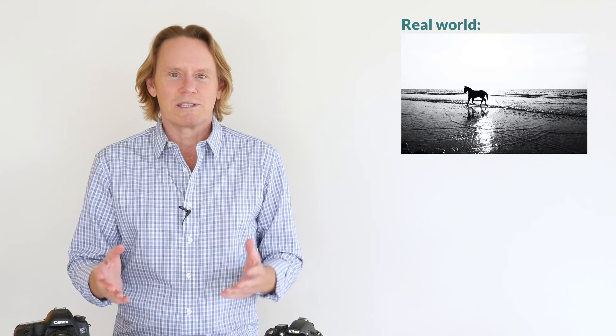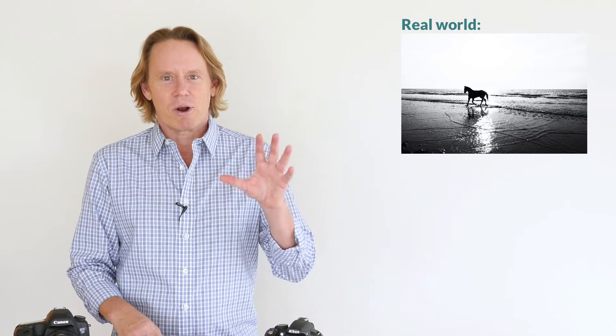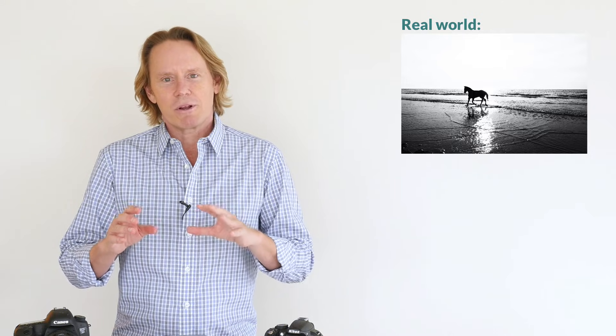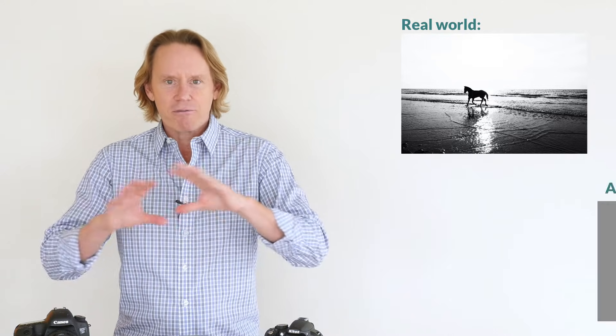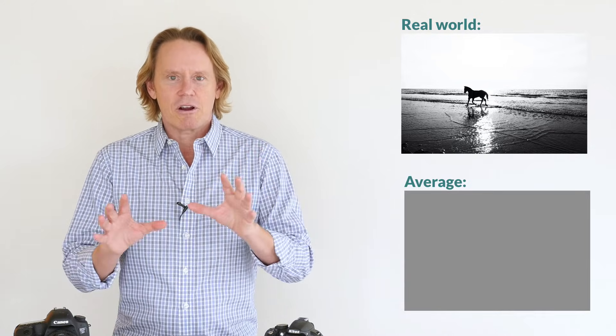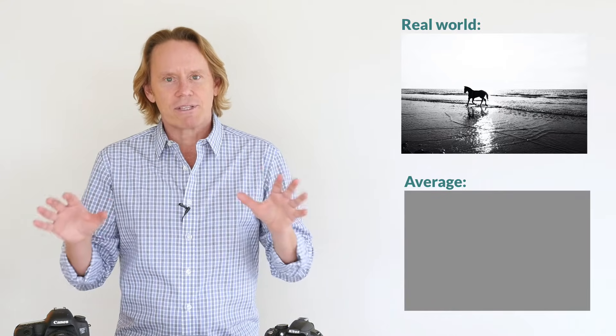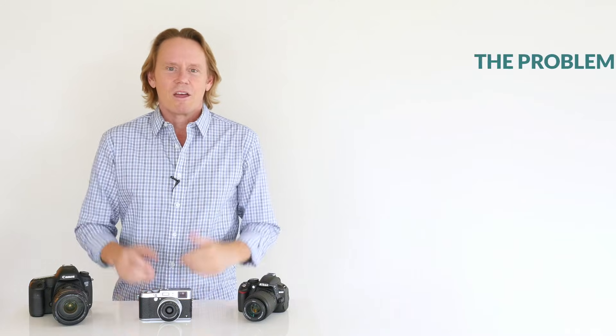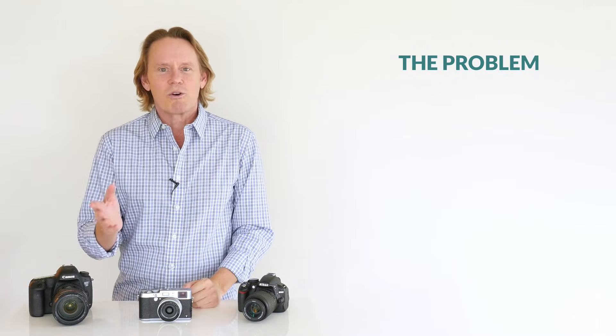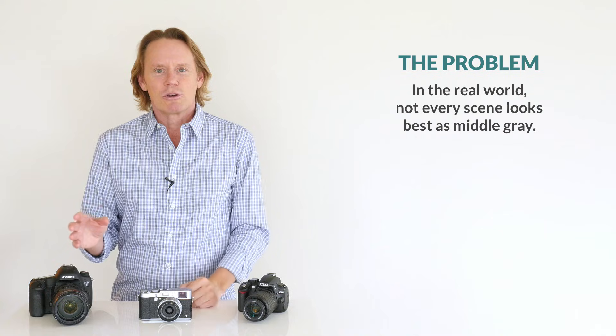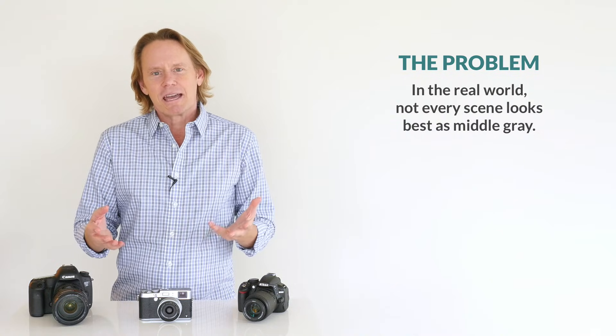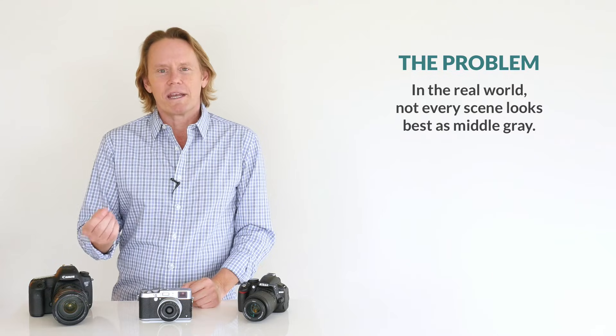Now obviously, the real world is a little bit more complicated. Some parts of your scene are brighter, some parts of your scene are darker. So what your camera is trying to do is to average out the light bits and the dark bits so that it all averages out to middle gray. That's what your camera thinks is a proper exposure. The problem, of course, is that in the real world, not every scene looks best averaged out to middle gray. The classic example of this is what I think of as the wedding photo problem. People wearing black clothes or white clothes are often difficult to photograph because their clothing confuses your camera's light meter.